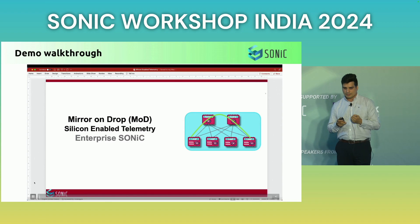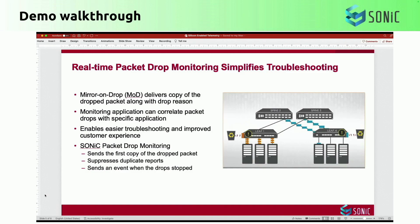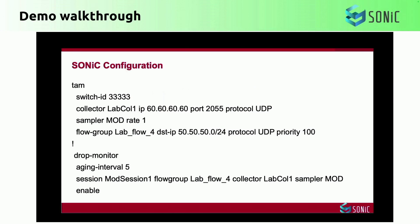Mirror on Drop, or MOD, is a Broadcom silicon feature that allows real-time drop monitoring for your business-critical applications. MOD tells you what is impacted - which application and user group - where the packet drop is happening by giving you the exact switch ID, and why the packet drop is happening by providing a drop reason. It gives your operations team real actionable insight so they can very quickly root cause and fix a packet drop problem.